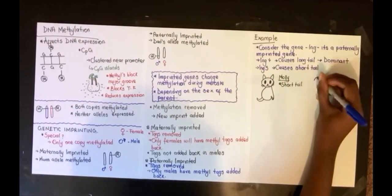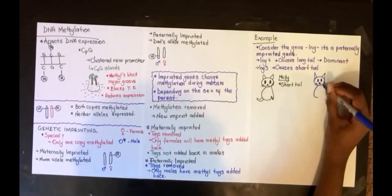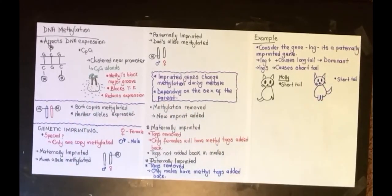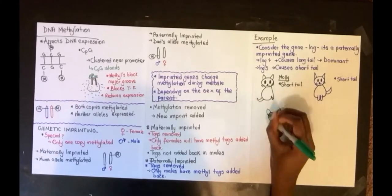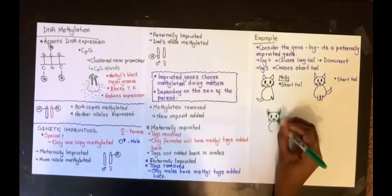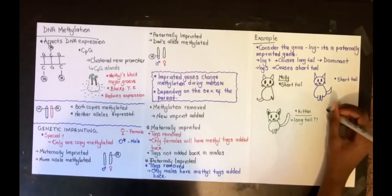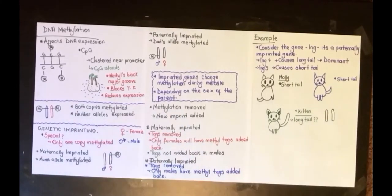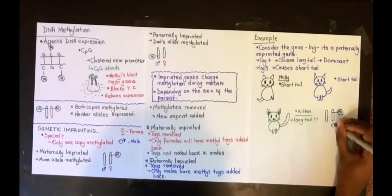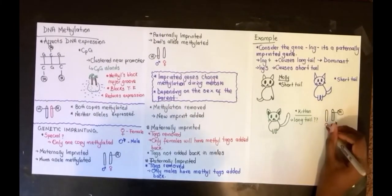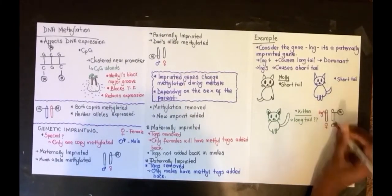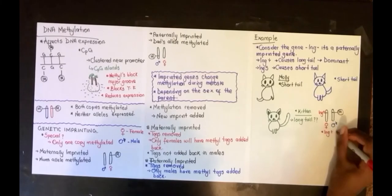So why exactly does the kitten have a long tail? Going off our knowledge of genetic imprinting, let's figure out what happened. We know the allele long plus is from mom because the cat has a long tail. How do we know that? Well, the gene is paternally imprinted, meaning that the copy from dad is going to be methylated and won't be expressed. So only the gene gotten from mom, that's Molly, will be expressed.